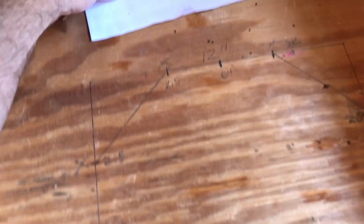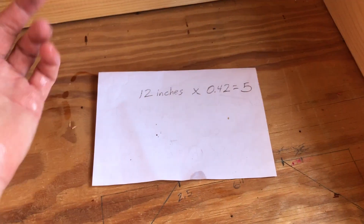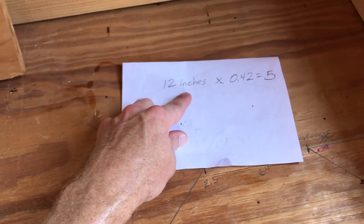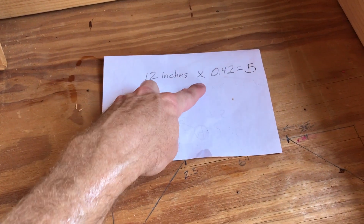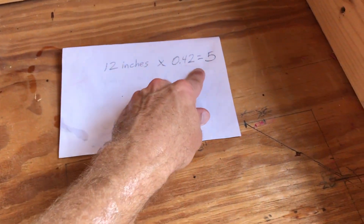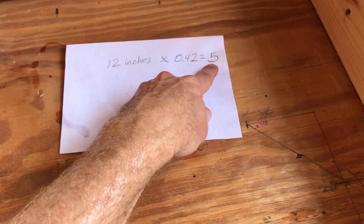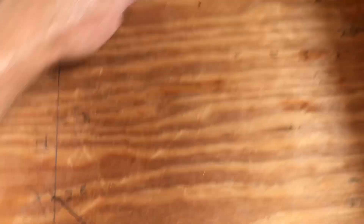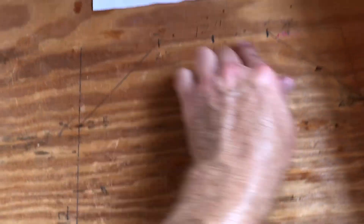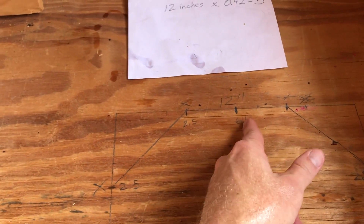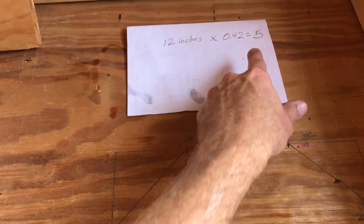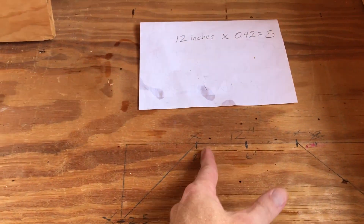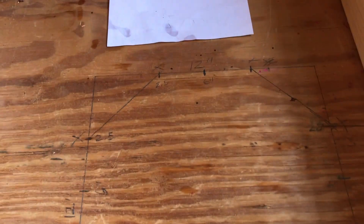I thought it was a pretty cool little trick to show y'all. Use your math formula: take the side of your square, multiply it by 0.42 — gives you 5. Find the middle of the length of your square, which is 6. Divide that result by 2, measure over, and then just connect your lines.